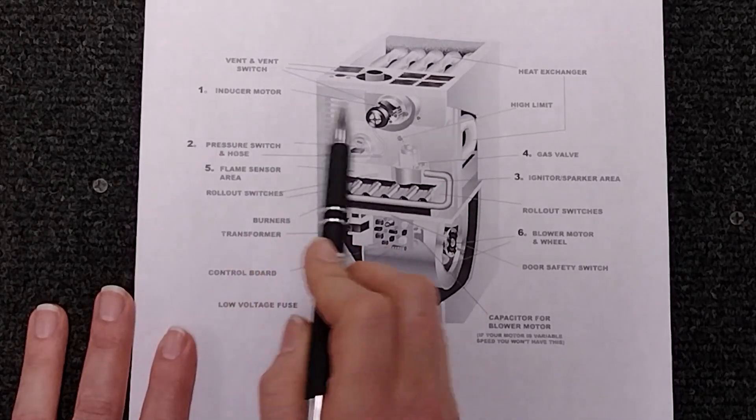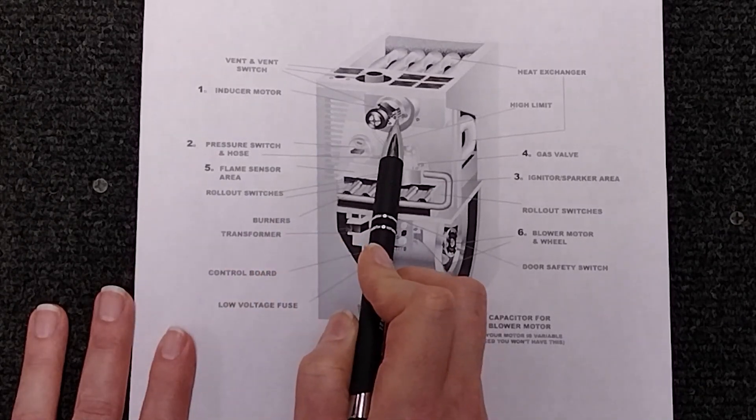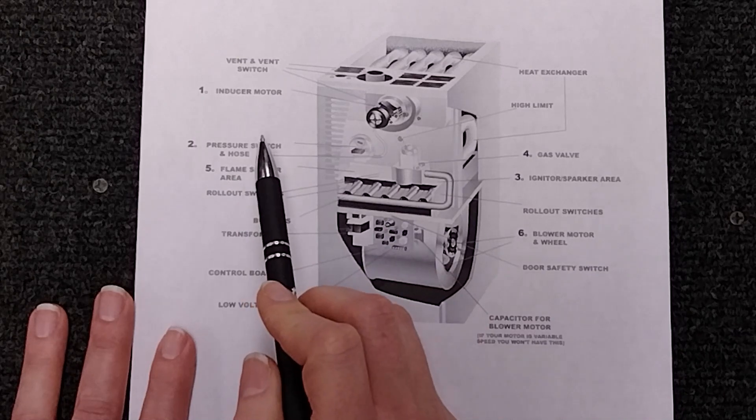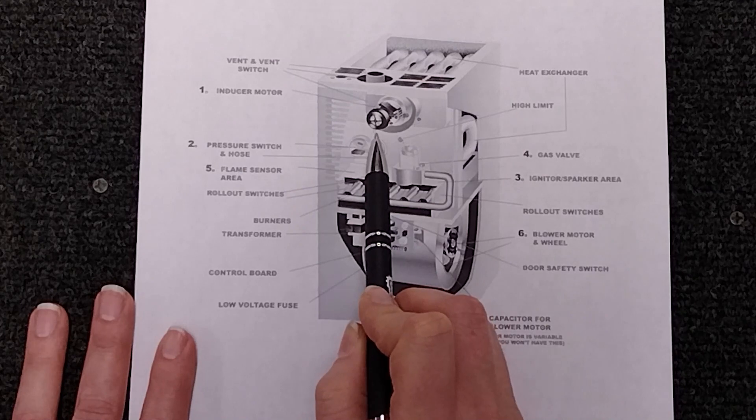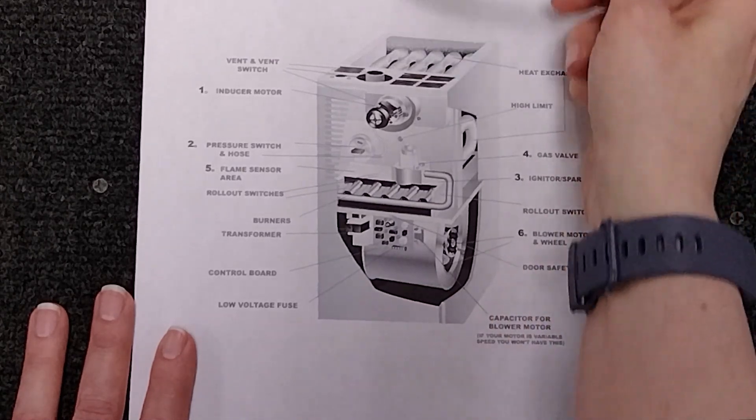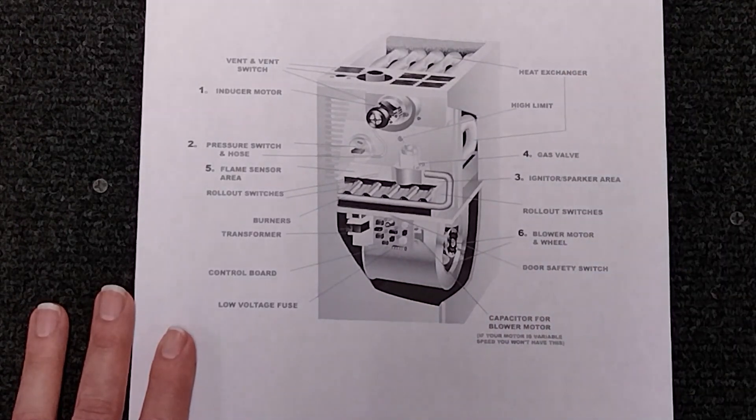So the very first thing as we mentioned inducer motor. The second thing is your pressure system which is your pressure switch and hose, your inducer motor, and your flue pipe that goes up to the roof.